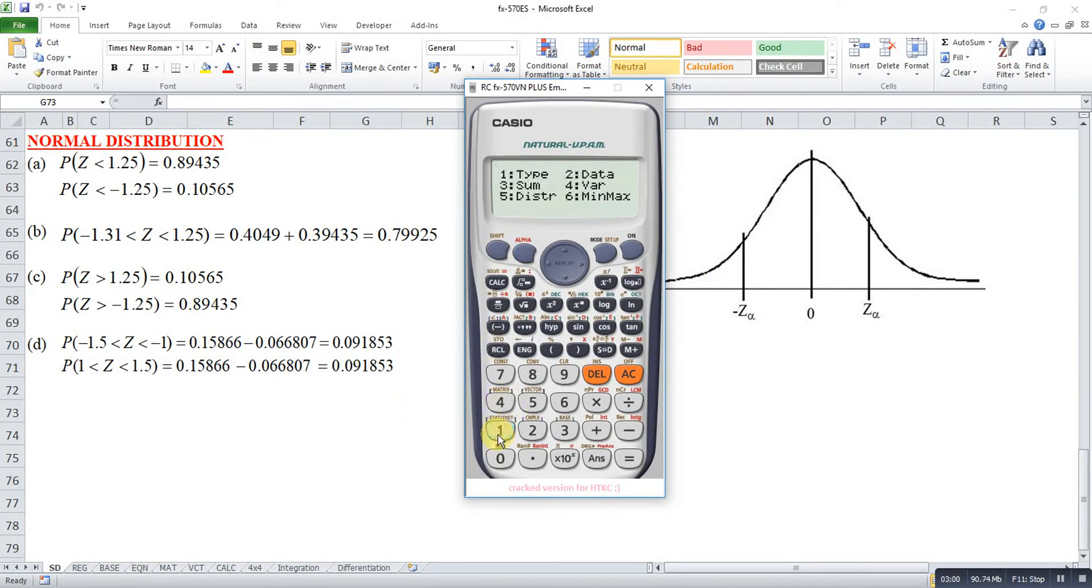So if let's say we want to use left tail, that will be Shift 1, 5. Then left is P. So 1. Then we take negative 1.